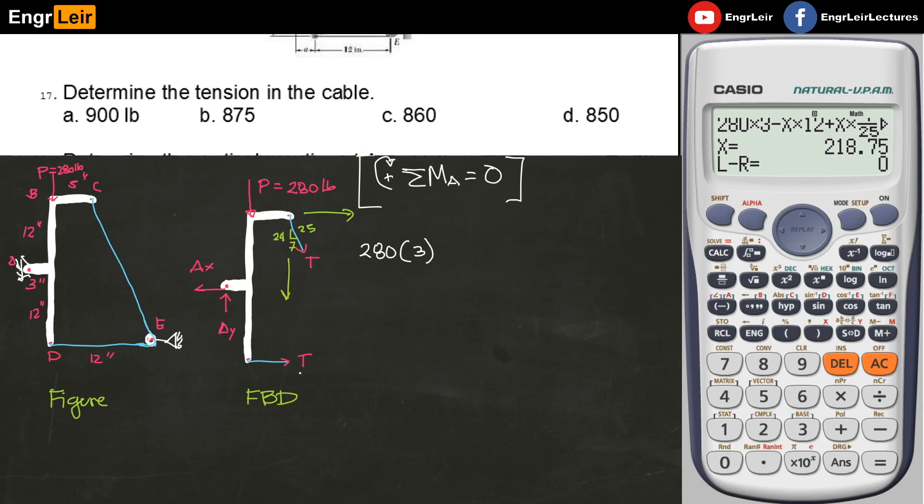So we have T. The moment arm is this one, which is 12 inches, times 12. It will rotate point A in a counterclockwise direction, so it's negative. Then, the T at the top, I wrote it in component form. We have T times its X component, which is 7 over 25 of T. This is the green one, and its moment arm is this length, which is 12 inches.